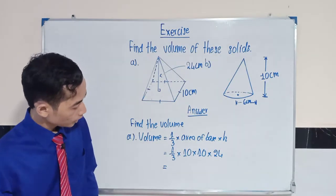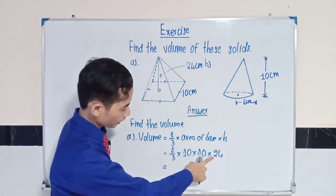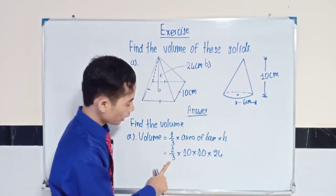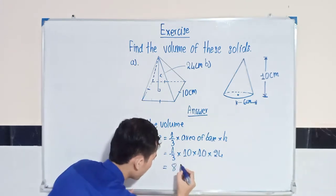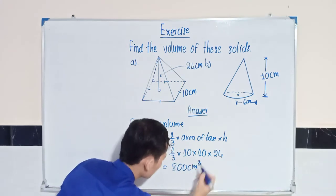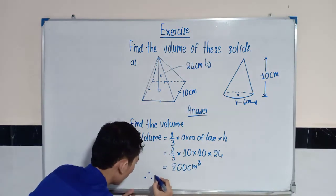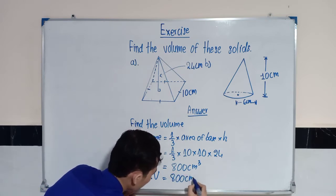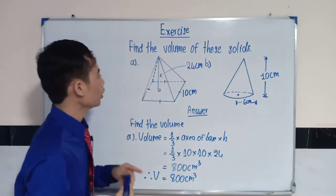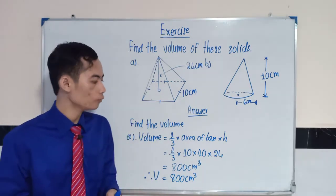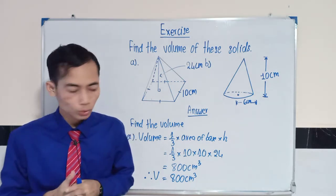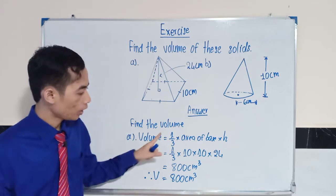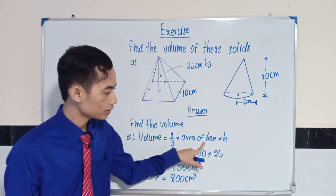That is 1 over 3. You can take 24 divided by 3 is equal to 8. And 8 times 10 times 10 is equal to 800 centimeter cube. So I think we can do it if we remember the formula to find the volume. We need to remember volume is equal to 1 over 3 times area of base times height.